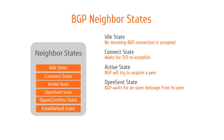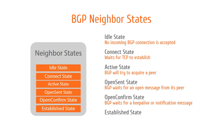If no errors are detected, BGP sends a keepalive message. The open confirm state: BGP waits for a keepalive or notification message. If no keepalive message is received before the hold timer expires, the local system sends a notification message stating that the hold timer has expired and changes its state to idle. Established state: BGP can exchange update, notification, and keepalive messages with its peer. While the negotiated hold timer is non-zero and if the local system receives an update or keepalive message, the hold timer will restart. When the hold timer reaches zero, the local system will again send a keepalive message and restart the hold timer.